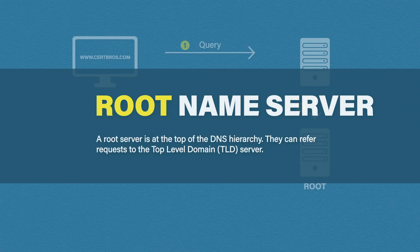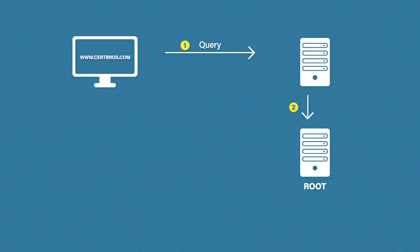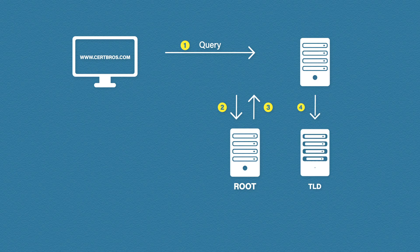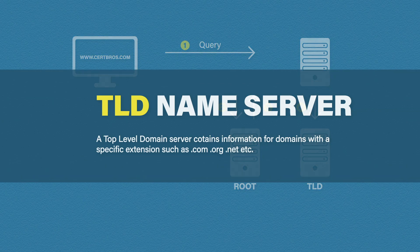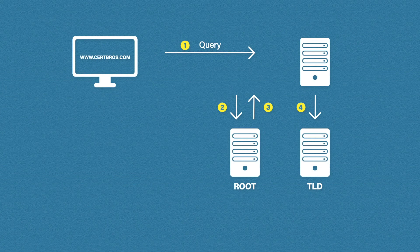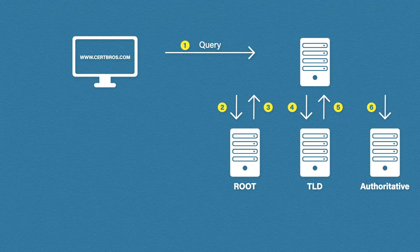The job of a root server is to provide the details of top level domain servers. A top level domain could be .com, .org, .net, etc. In this example, the root server will refer us to the top level domain server for .com. We then query that top level domain server for certbros.com. A top level domain server, or TLD for short, is a server that contains information for domains with a specific extension. In this example we've queried the .com TLD server, but the TLD still doesn't know the IP address we need — it will however know the location of the authoritative name server.